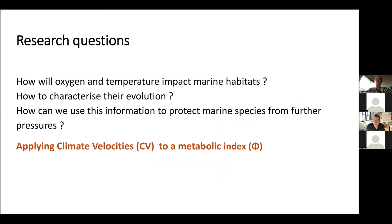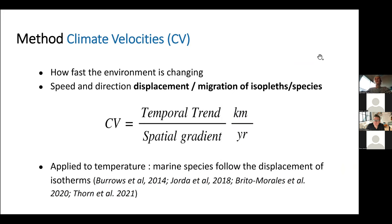What are climate velocities? Climate velocities describe how fast an environment is changing. It's the speed and direction of displacement of isoclines. It's calculated as the ratio of the temporal trend to the 2D spatial gradient, so it describes the temporal and spatial dynamic of change. Climate velocities have been applied to temperature and have shown that marine species migrations were quite consistent with isotherm migration. Here, we are going to apply them to a metabolic index.